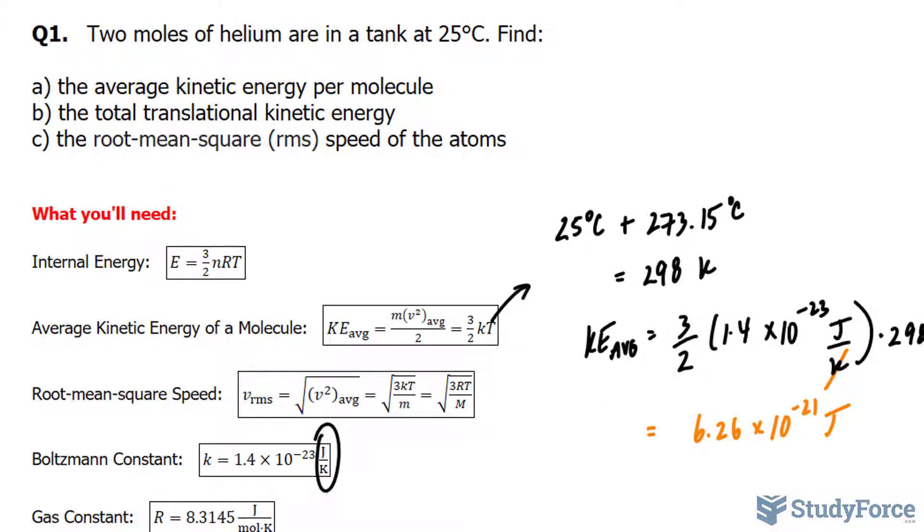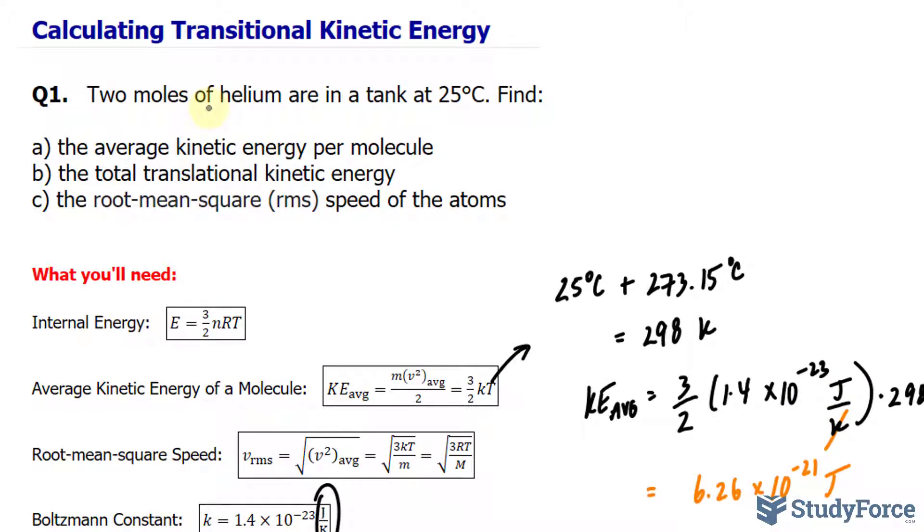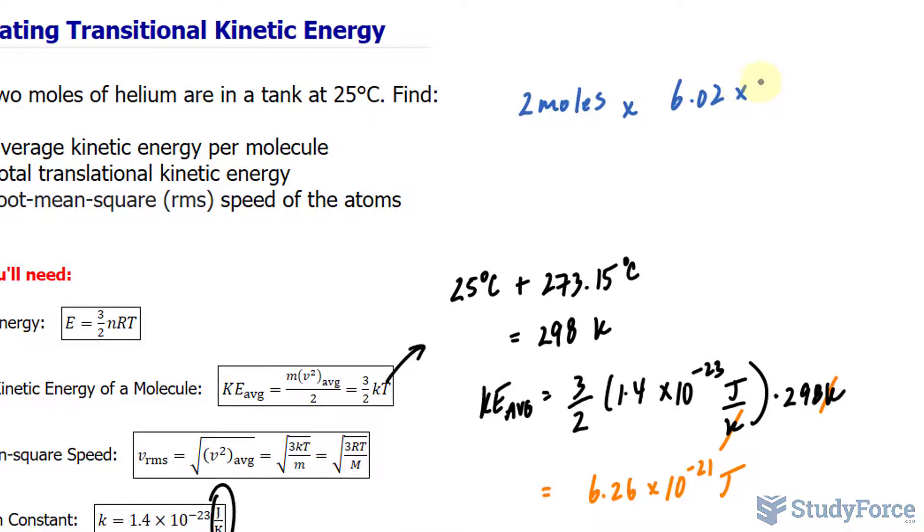Moving on to B, to find the total transitional kinetic energy, we will take this value and multiply it by the number of molecules. To calculate the number of molecules, we've been told that we have two moles of helium. And we'll multiply that to Avogadro's number, where we have 6.02 times 10 to the power of 23 molecules per 1 mole.